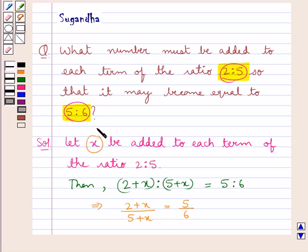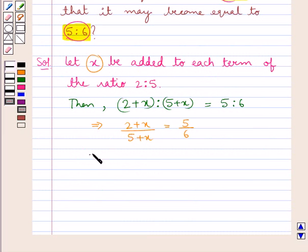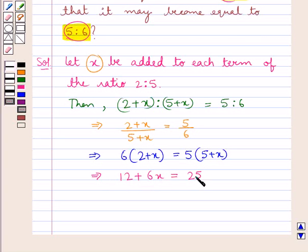So further cross multiplying we get 6 multiplied by (2 + x) is equal to 5 multiplied by (5 + x). That is, we have 12 + 6x is equal to 25 + 5x.